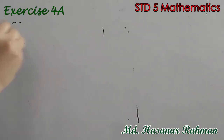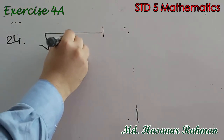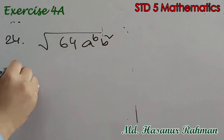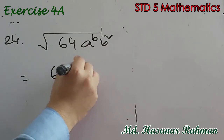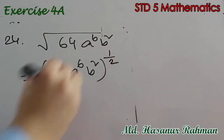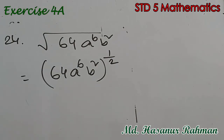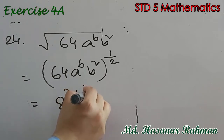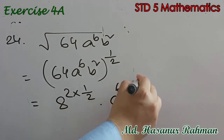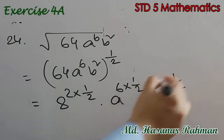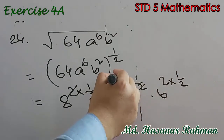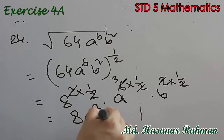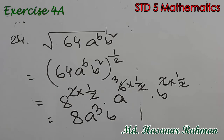Number 24 says root over 64a to the power 6 b squared. Square root means power half: 64a to the power 6 b squared to the power half. Since 64 is 8 squared, we get 8 to the power 2 into half, a to the power 6 into half, b to the power 2 into half. 6 divided by 2 is 3, and 2 divided by 2 is 1, so the answer is 8a cubed b.